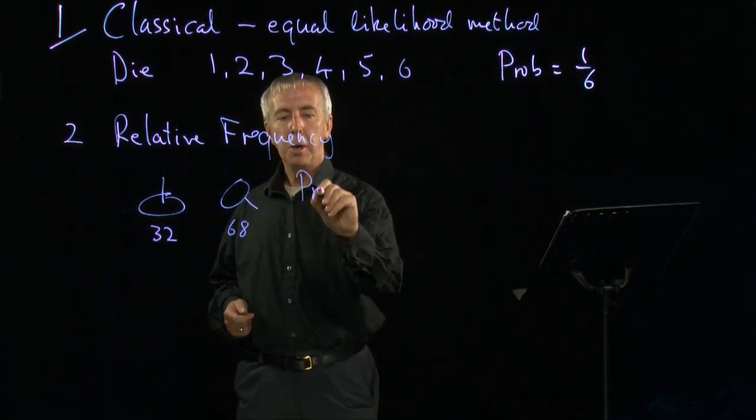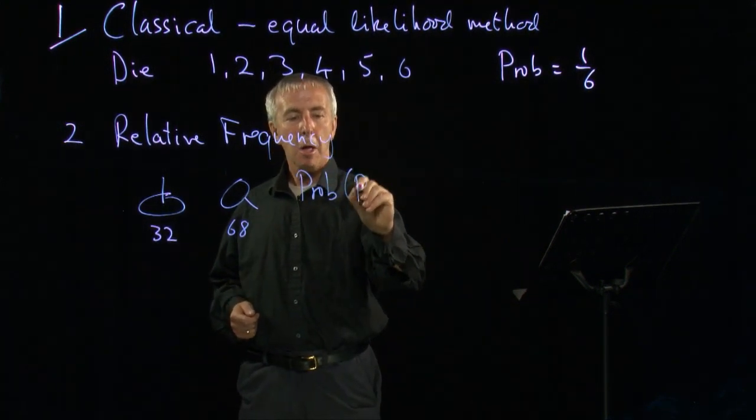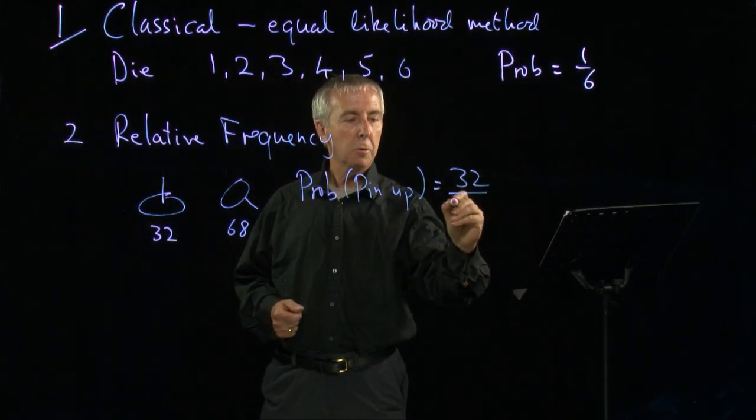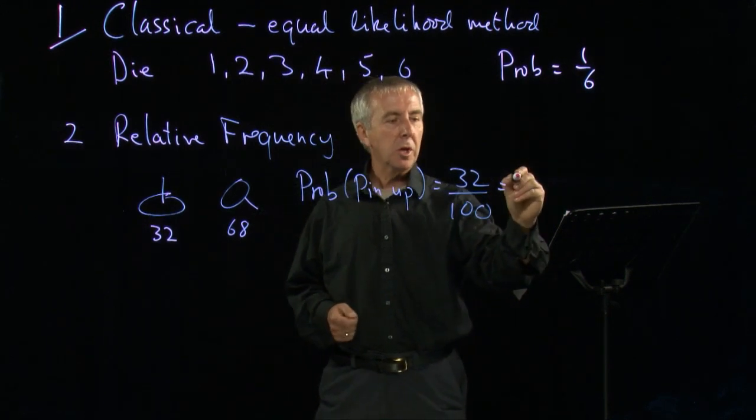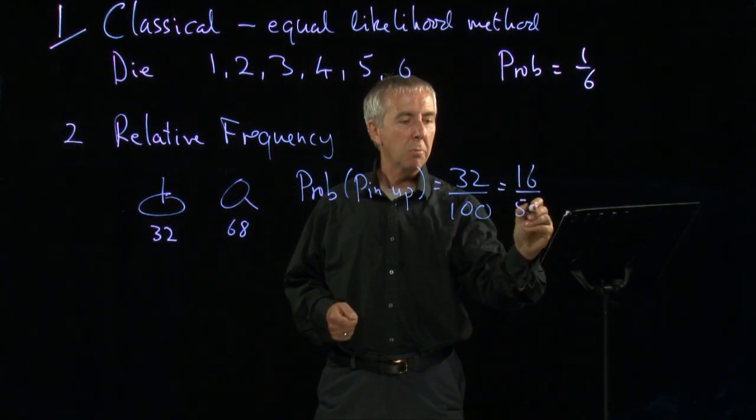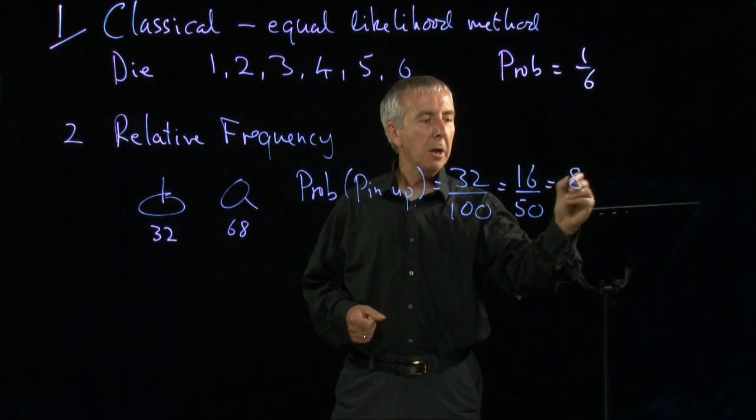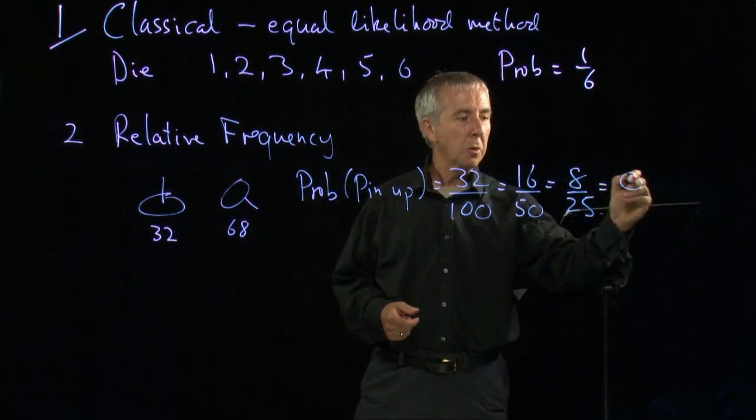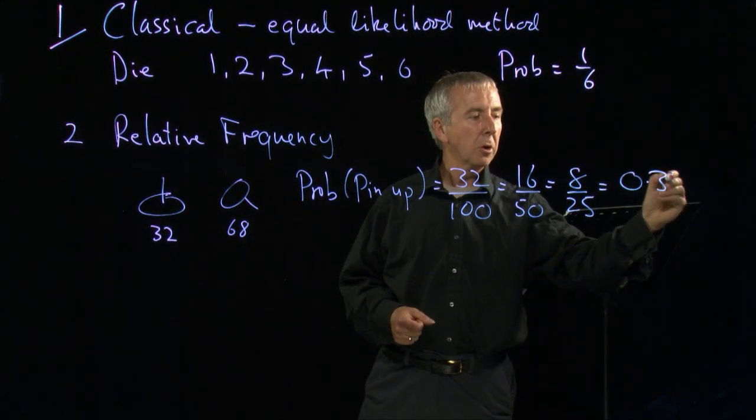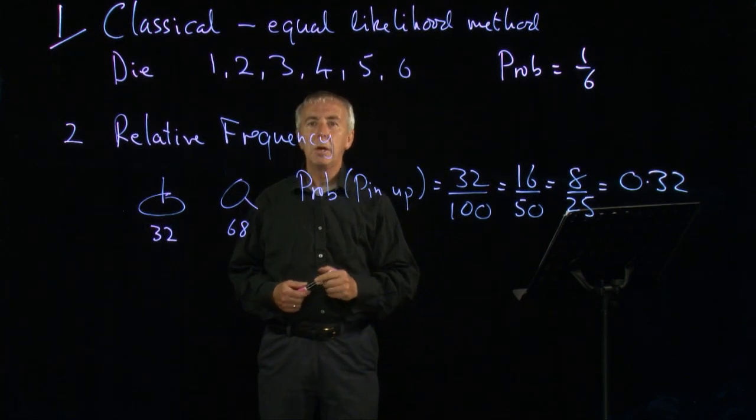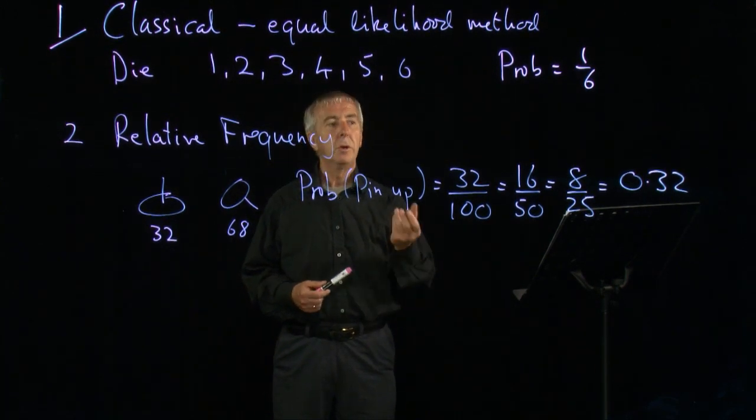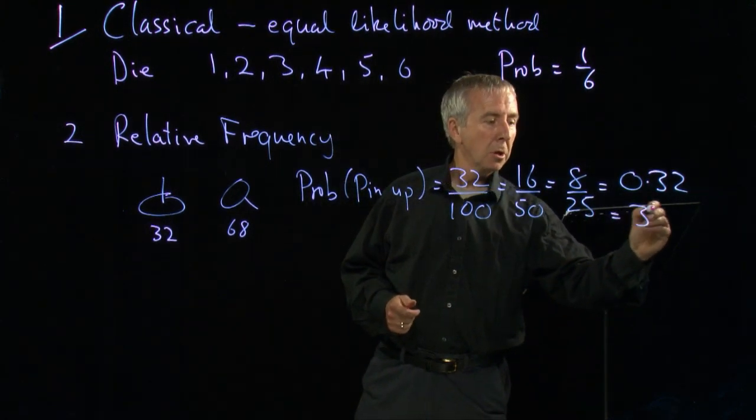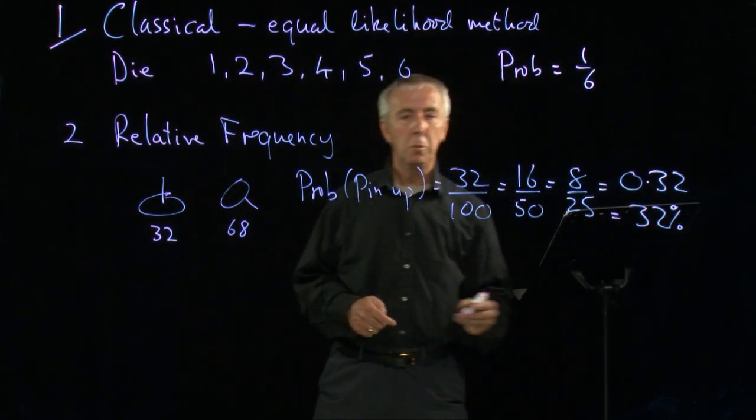So we would say the probability of pin being up equals 32 out of 100, which is 16 out of 50, and we can simplify, and we get 8 out of 25 as the simplest fraction. Or if you want to use a decimal, we just get 0.32. Probabilities can be represented as fractions, or decimals, or even percentages. We could call this 32% as well. They're all equally valid.